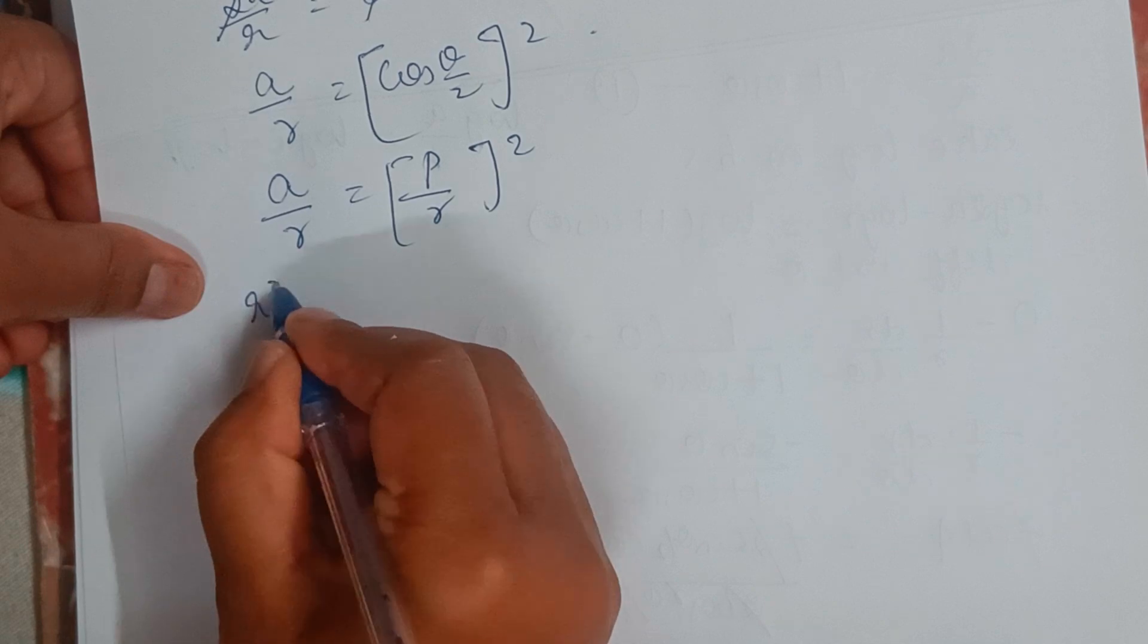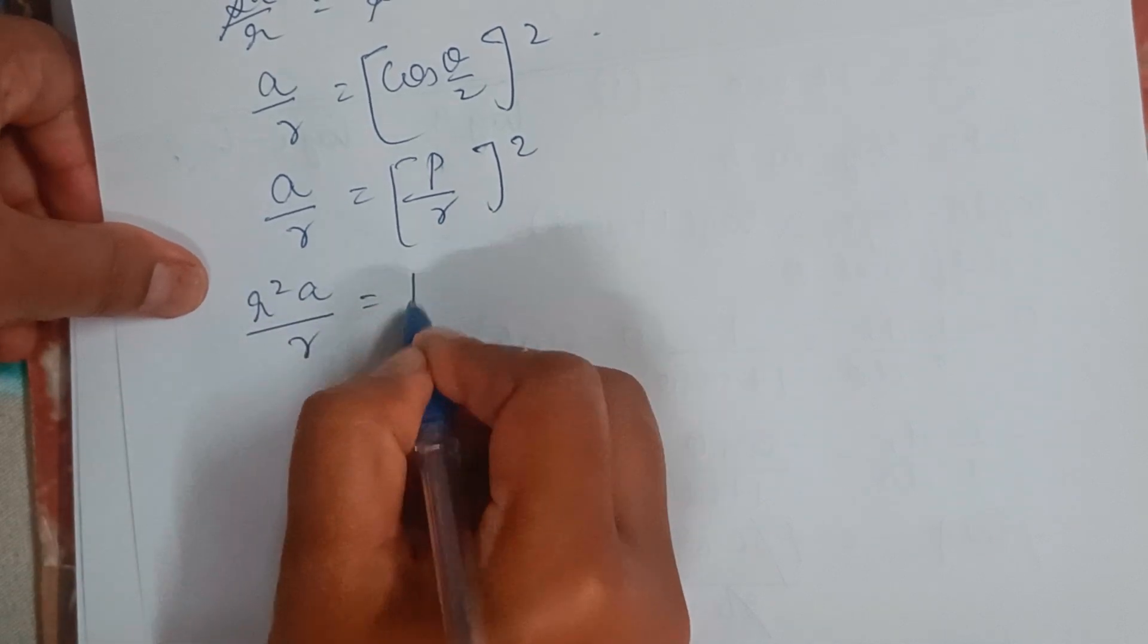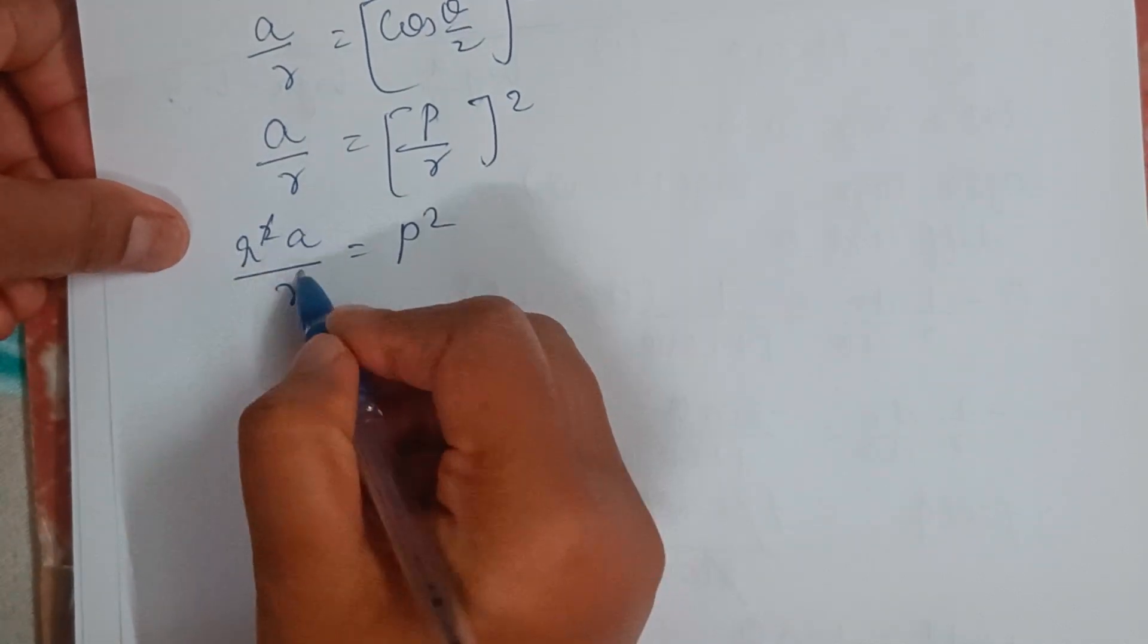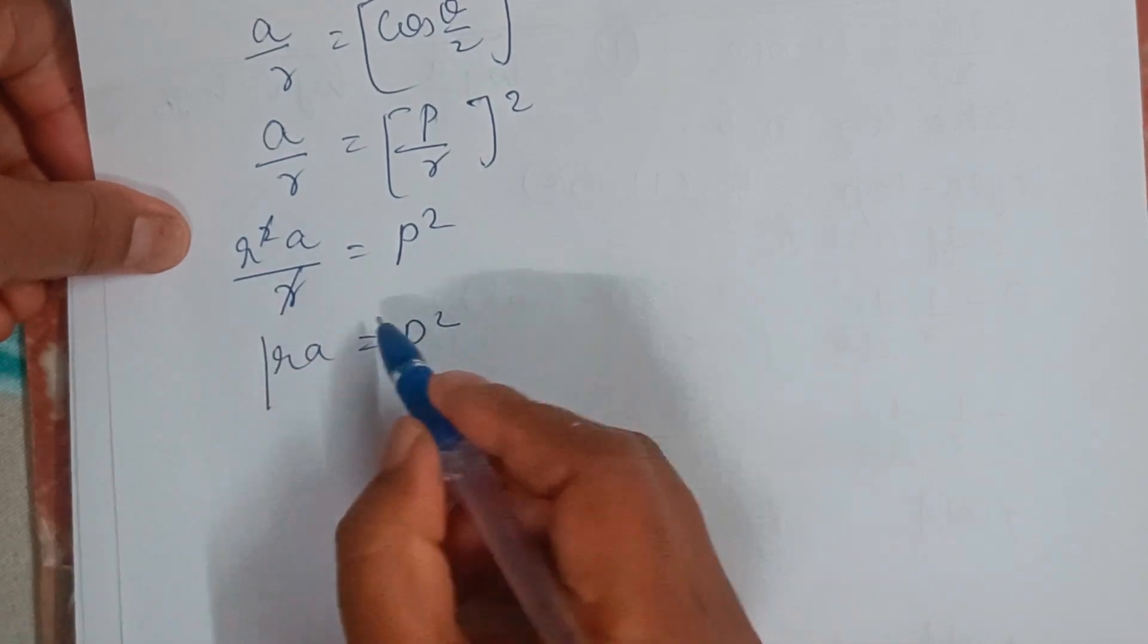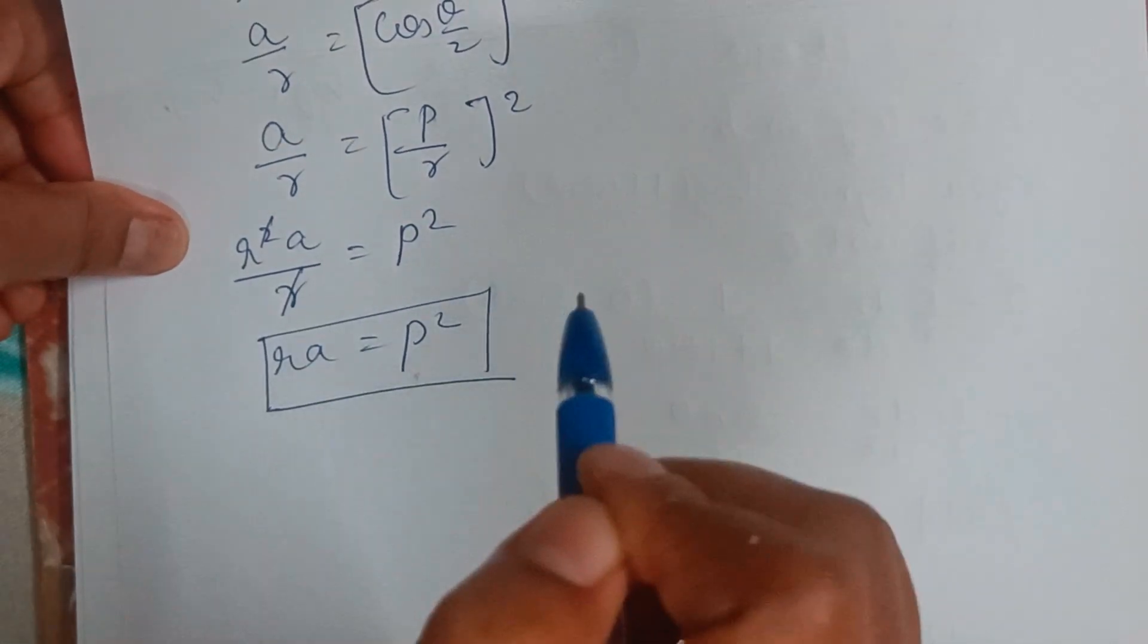Here it becomes R square into A divided by R equals P square. Square and R gets cancelled, R into A equals P square. Hence, this is the pedal equation.